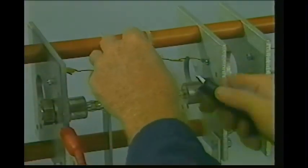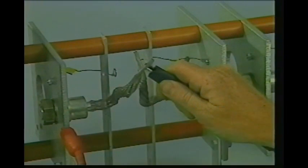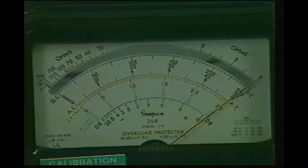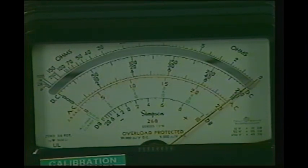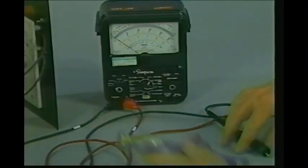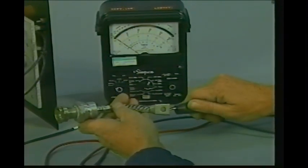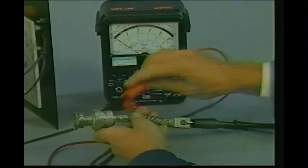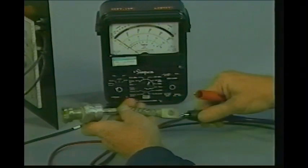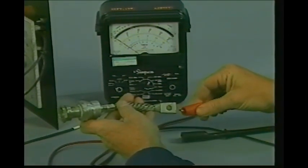The fourth diode shows low resistance or zero resistance in both directions. This means that the diode conducted in both directions and is shorted. There is another type of diode failure that can occur and that is an open diode. An open diode will show a high reading in both directions.